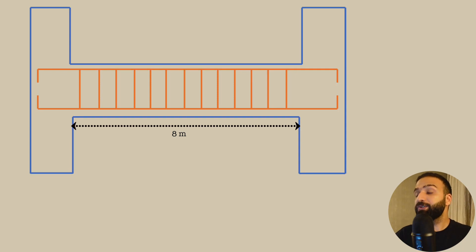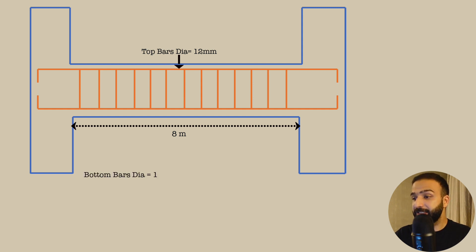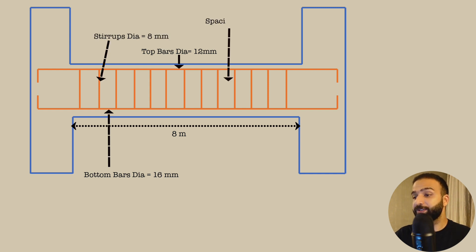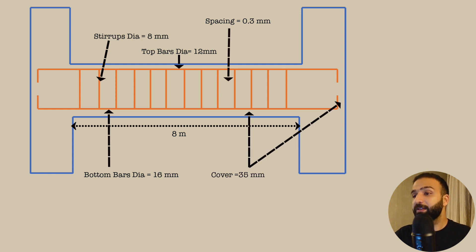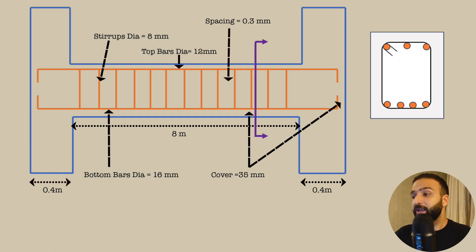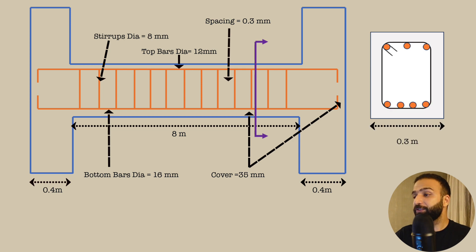On your screens you see a beam. Here's what we know: the diameter of the top bars is 12 millimeters, the diameter of the bottom bars is 16 millimeters, the diameter of the stirrups is 8 millimeters, the spacing between the stirrups is 0.3 meters, and the concrete cover is 35 millimeters. The width of the column is 0.4 meters. Taking a section, we can see the number of top bars is 3 and the number of bottom bars is 4. The width of the beam is 0.3 meters and the height of the beam is 0.35 meters.